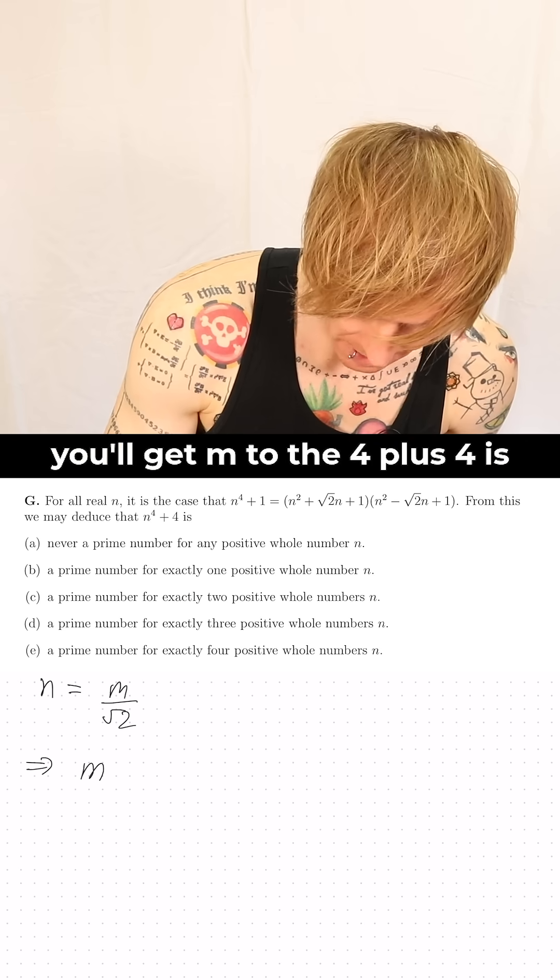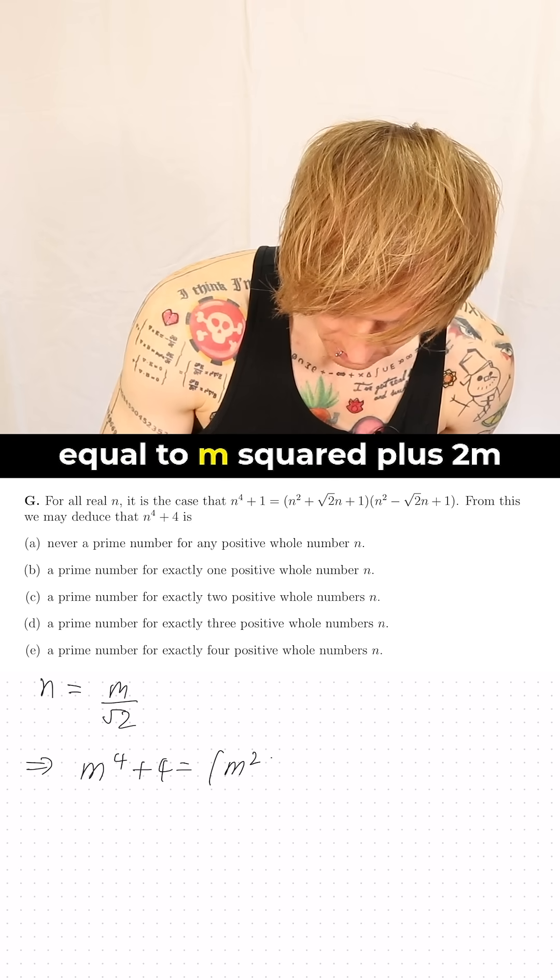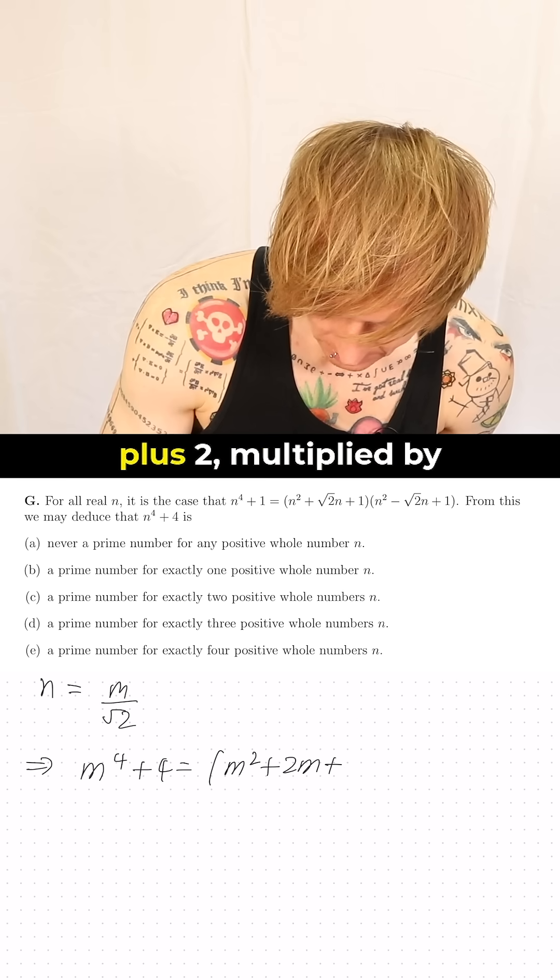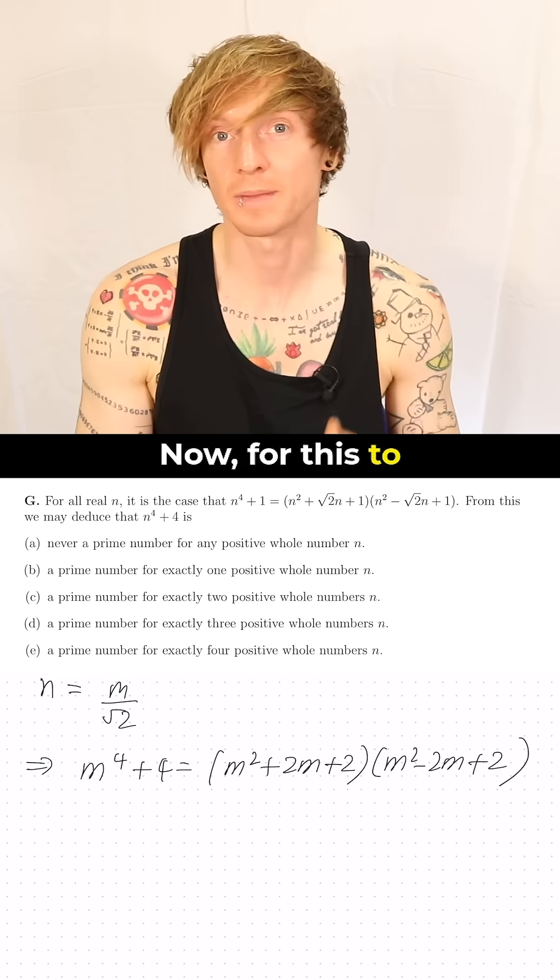we sub that in and simplify and you'll get m to the 4 plus 4 is equal to m squared plus 2m plus 2 multiplied by m squared minus 2m plus 2. Now for this to be prime,